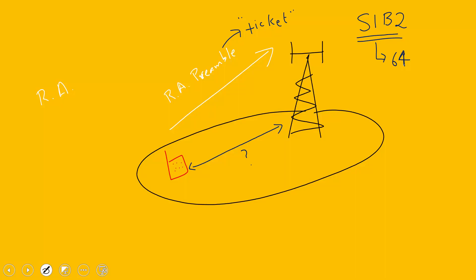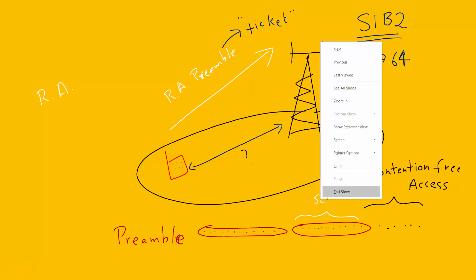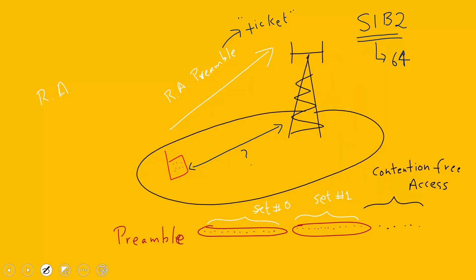The question now is: how do we know about the 64 preambles and are there certain types? For visualization, let's say we draw preamble sets here. This is preamble set 1, this is preamble set 2, and then there are preambles reserved for contention-free access. So there are different subsets within the total 64 preambles, with some designated for contention-free access.